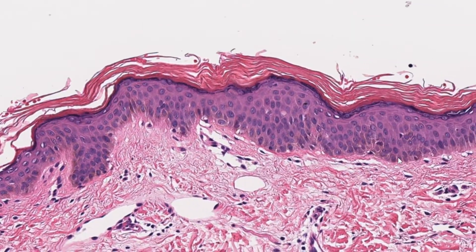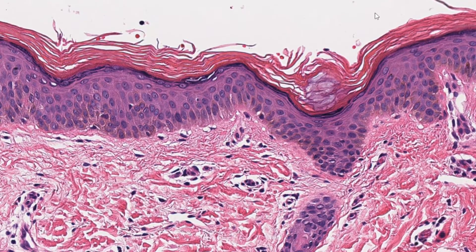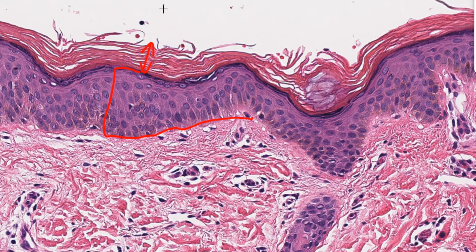Inside all these layers, let's start with the epidermis. We can already see that this is thin skin. In thin skin, the most superficial layer of the epidermis — the stratum corneum — is thinner than the thickness of the viable cells below it.